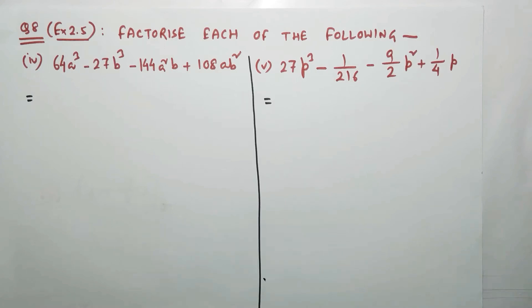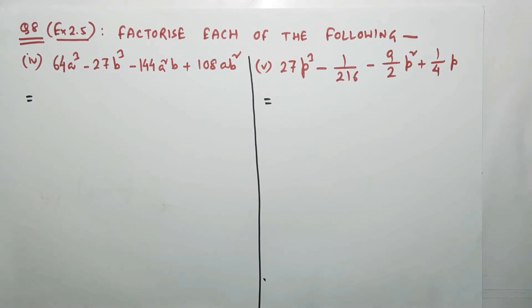Question number 8, Exercise 2.5 — the question is to factorize each of the following. Yesterday we completed question number 8, parts 1, 2, and 3, so today we are going to start parts 4 and 5.